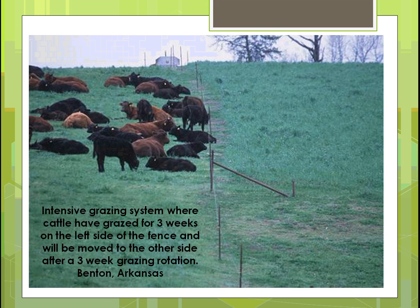Here's an example of using grazing to provide fertilizer from animal waste. This is an intensive grazing system where animals have been on the left side of the fence for about three weeks and will soon be moved to the other side. The grass is higher on the fresh side — they've pretty much eaten the other side down to the level. You don't want them to get all the way to the ground, but once they've eaten enough you move them to the other side of the fence. You're moving the fertilizer around, not concentrating too much in one area, and it works out beautifully.